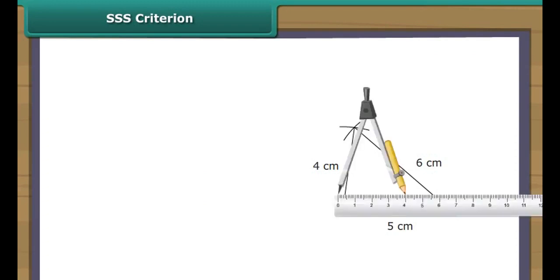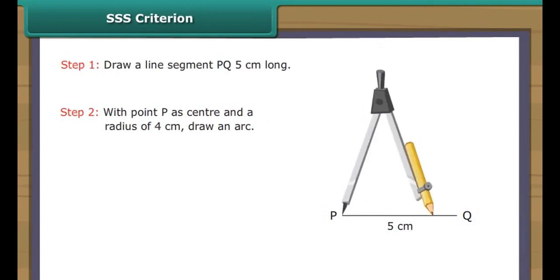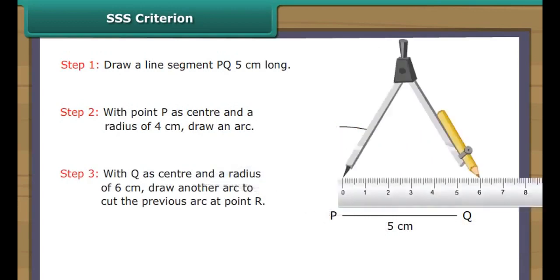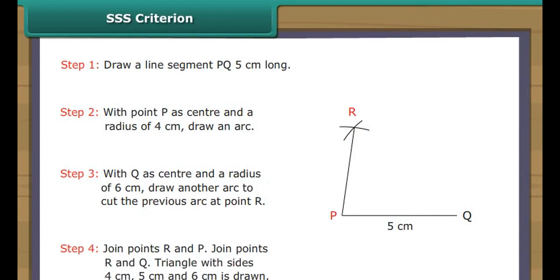SSS Criterion. Let us draw a triangle whose three sides measure 4 cm, 5 cm and 6 cm with the help of a ruler and a compass. Draw a line segment PQ 5 cm long. With point P as center and a radius of 4 cm, draw an arc. With point Q as center and a radius of 6 cm, draw another arc to cut the previous arc at point R. Join points R and P. Join points R and Q. Triangle with sides 4 cm, 5 cm and 6 cm is drawn.